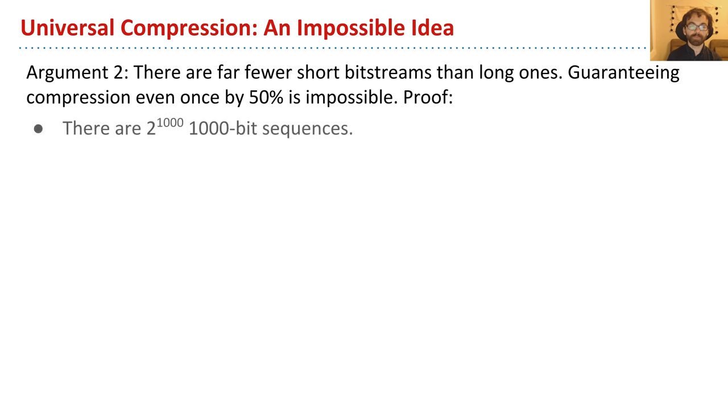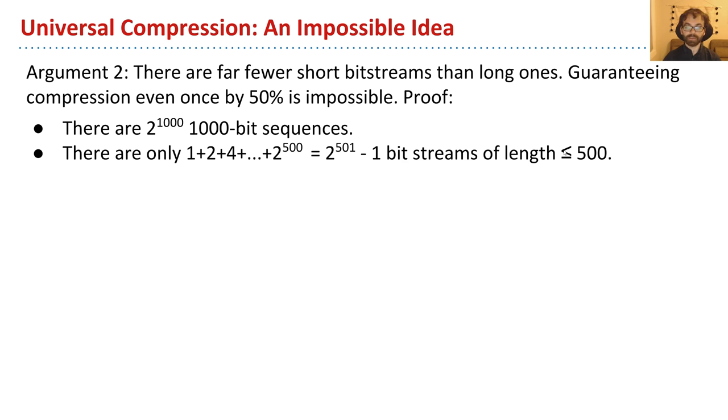Now here's my proof. There are 2 to the 1,000 1,000 bit sequences. That's how many different sequences there are of length 1,000. Well, how about bitstreams of less than or equal to length 500? Well, it turns out the numbers basically are this. There's one bit sequence that is blank. There's two bit sequences of length 1. There are four bit sequences of length 2. There are eight bit sequences of length 3, and so forth. So if I add all these up, I see that there are only 2 to the 501 minus 1 bitstreams of length less than or equal to 500.